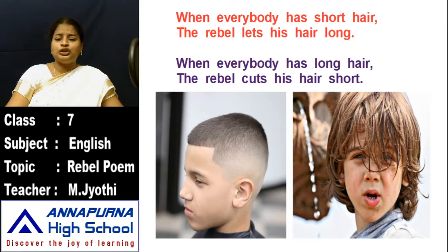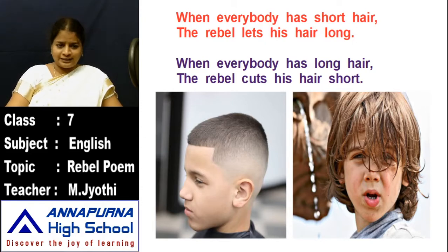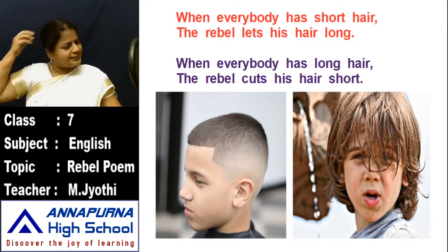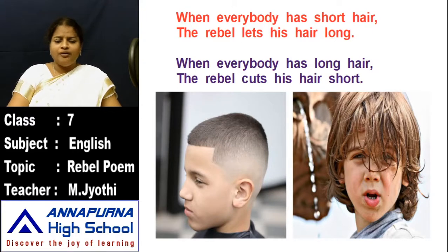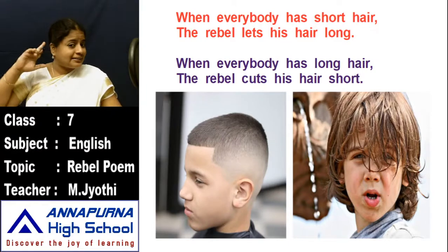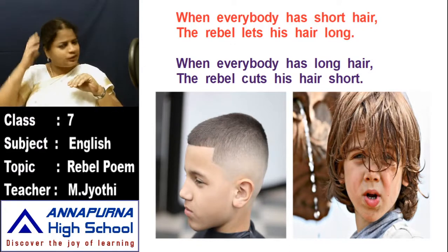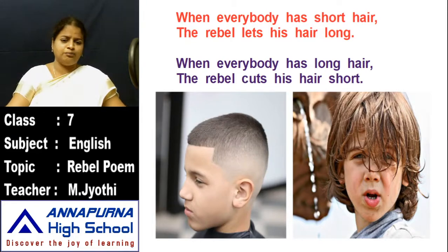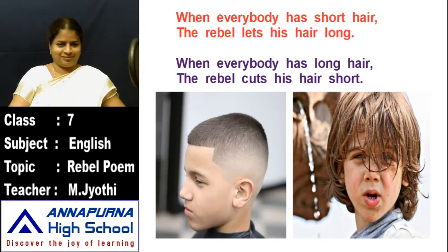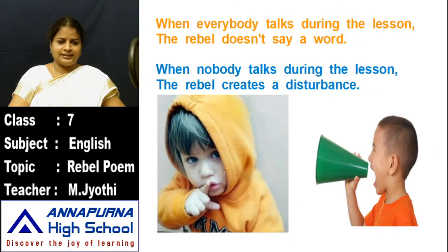Let us go to the explanation of the poem. First four lines: When everybody has short hair, the rebel lets his hair long. When everybody has long hair, the rebel cuts his hair short. If everyone has short hair, the rebel says no, I want my hair long — he lets his hair long. You can see it in the picture.